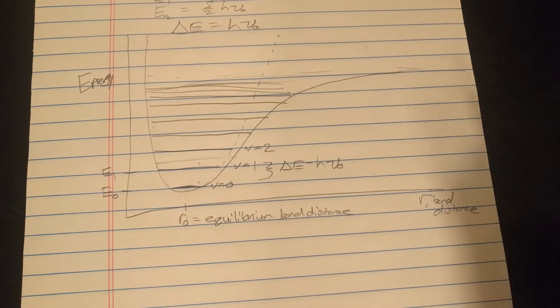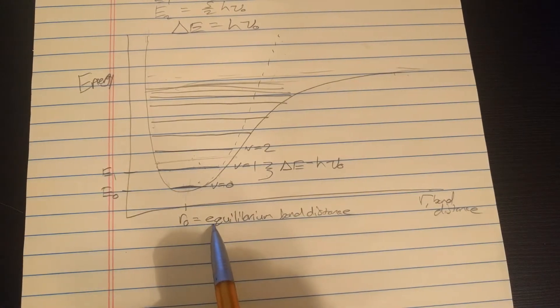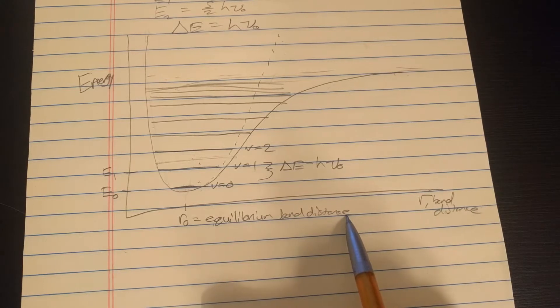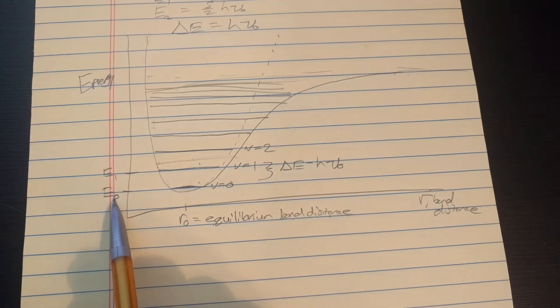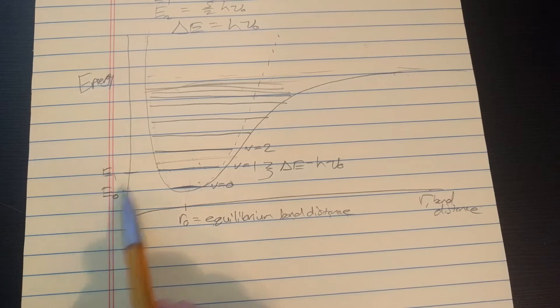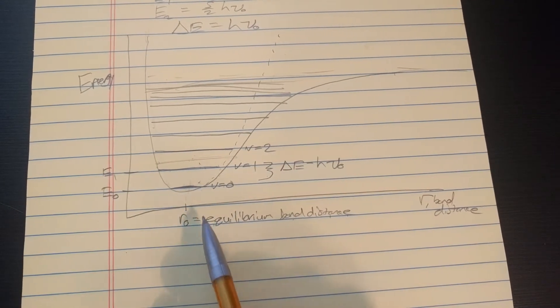So, if you look up the bond distance for carbon monoxide, for example, the number that's going to be reported is the equilibrium bond distance. Because, the bond distance is really a function of, well, time, for one, and a few other things. The bond distance is oscillating back and forth, but the average bond distance is R-naught.